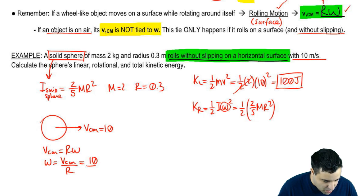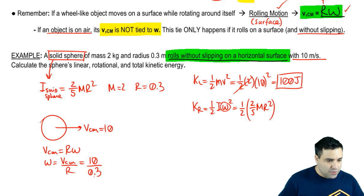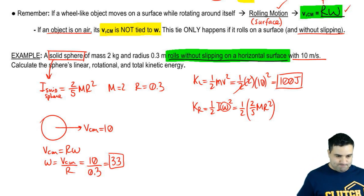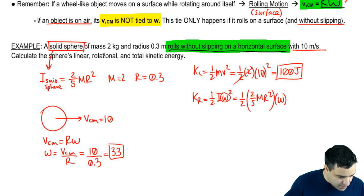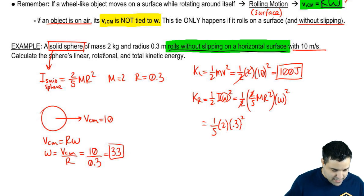V_cm is 10. R is 0.3. So this guy here will be 33. Omega will be 33. So I can put omega over here. Notice that the 2 cancels with the 2. And then I'm going to have 1 over 5. The mass is 2. The radius is 0.3 squared. And omega, which is 10 over 0.3. Now if you want, what you could also do is instead of writing 33 here, I'm actually going to write this.